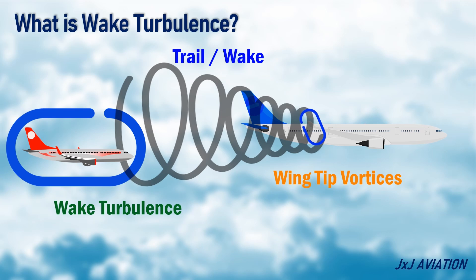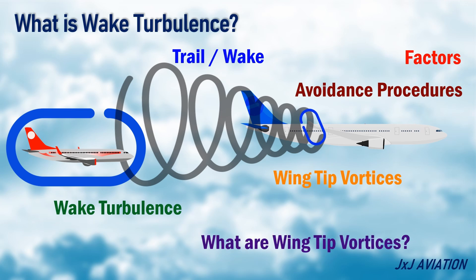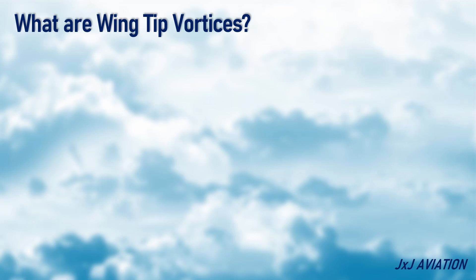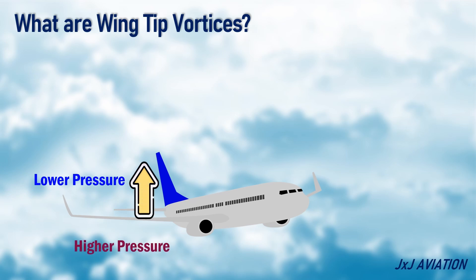Before we look at the factors that influence the wake and the avoidance procedures, we need to look at what are wingtip vortices. When an aircraft moves forward, above the upper surface of the wing, the air is at lower pressure. Below the lower surface of the wing, the air is at higher pressure. This pressure difference generates the lift force on the wings.